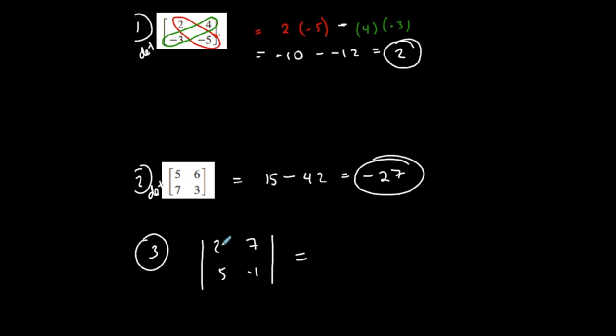So first diagonal, this product, negative 2, minus this product, 35, which is negative 37. Not difficult, these are determinants of 2 by 2 matrices.